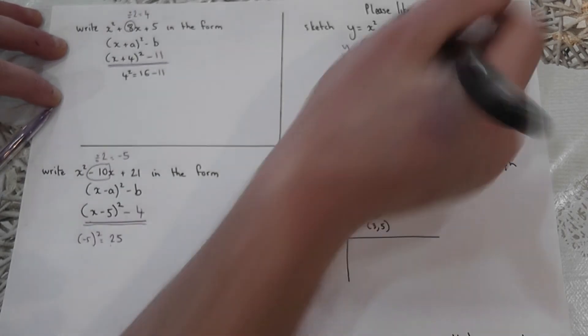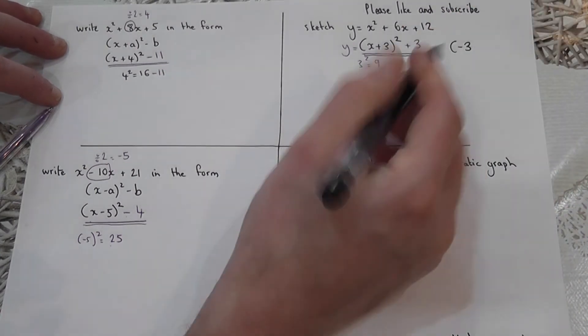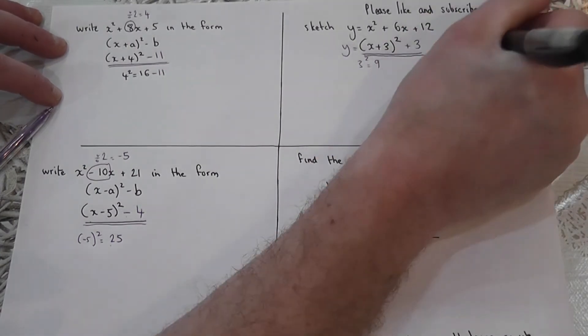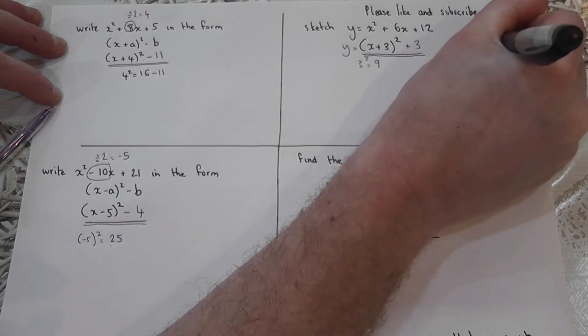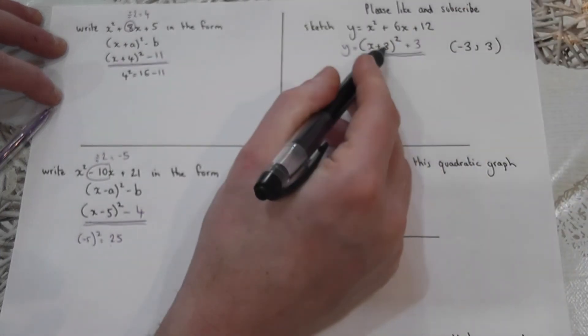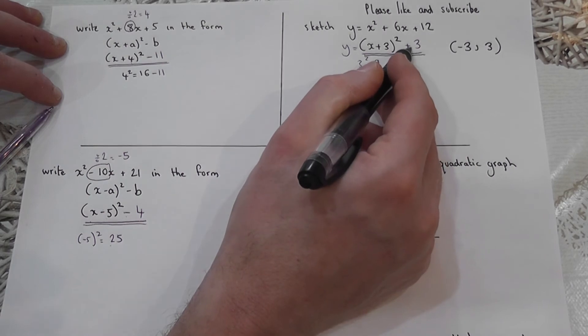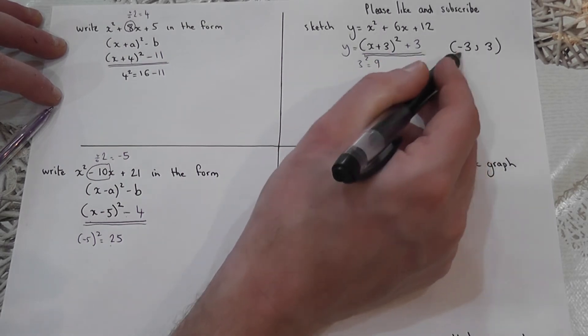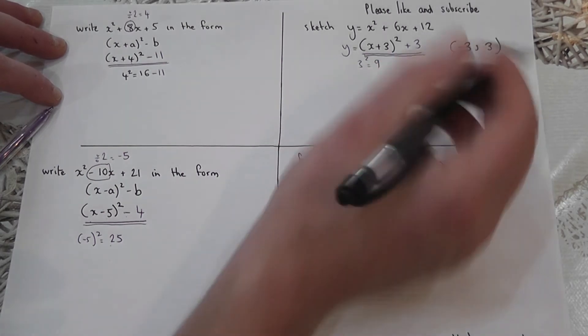But to get the vertex coordinate, I always change the sign of the number in the bracket. So plus three becomes negative three. And keep that sign, so that stays as positive three. Change the first sign to get negative three. Keep the second sign so it stays as positive three. And that is called the coordinate of the vertex.